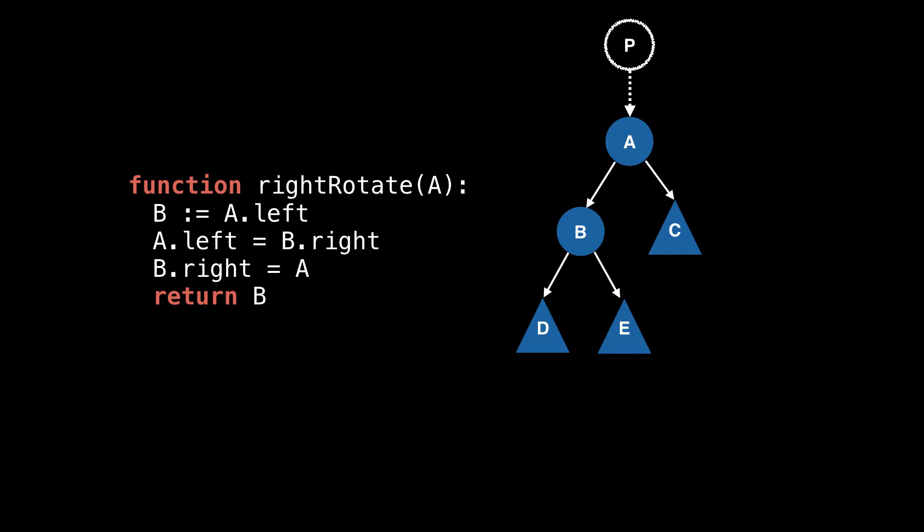This is why there is a dotted line on that edge. If node A does have a parent node P, then it is important that we take it into account when doing the rotation. In either case, we start with a pointer reference to node A, this is the orange arrow.